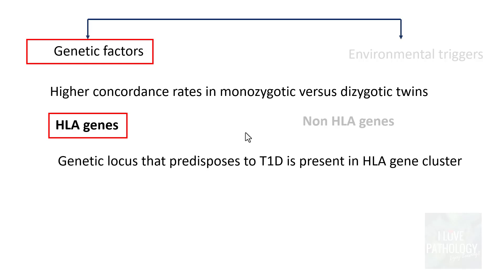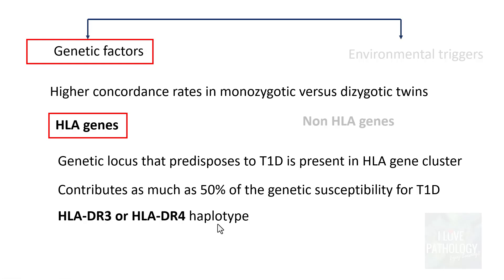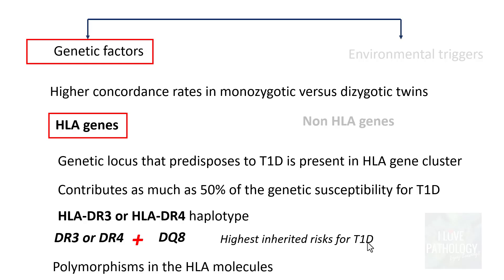There is a genetic locus in the HLA gene cluster that predisposes to type 1 diabetes mellitus, contributing as much as 50% of the genetic susceptibility. If an individual has the HLA-DR3 or HLA-DR4 haplotype, they have a greater propensity to develop type 1 diabetes mellitus. If that individual also has an HLA-DQ8 association, this confers the highest inherited risk for development of type 1 diabetes mellitus. Polymorphisms in the HLA molecules are also associated with type 1 diabetes mellitus.